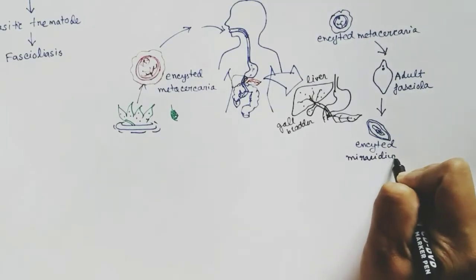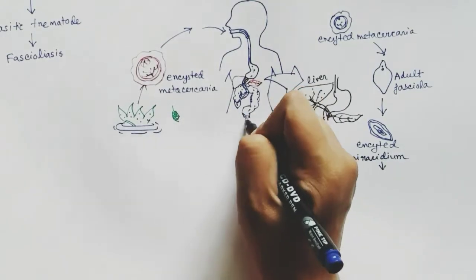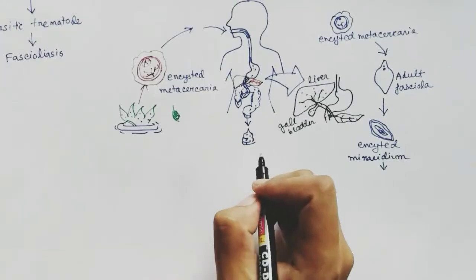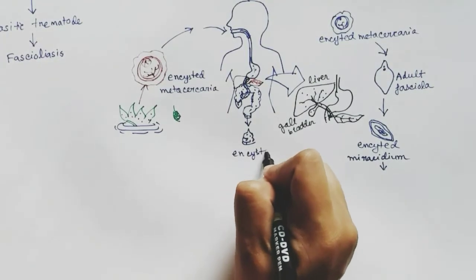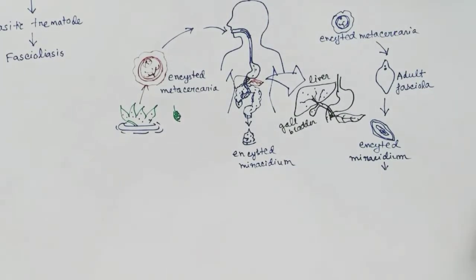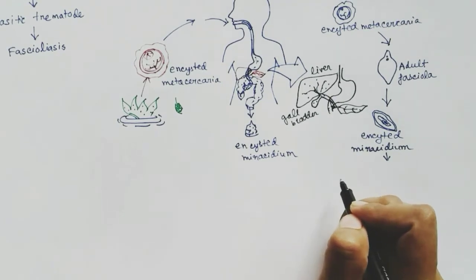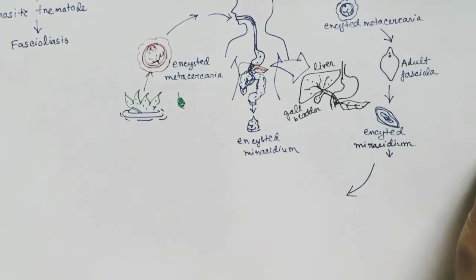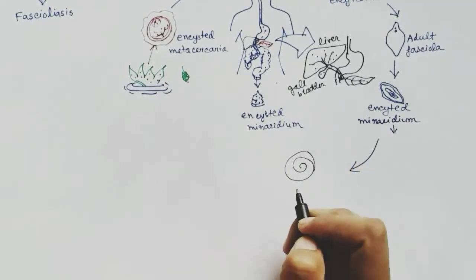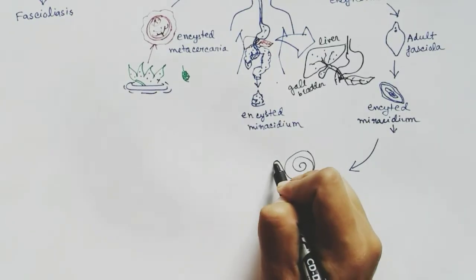The encysted miracidium exits our body through the feces. So in the feces of infected humans or infected cattle we find the encysted Fasciola miracidium. When this miracidium reaches water, it gets consumed by snails.